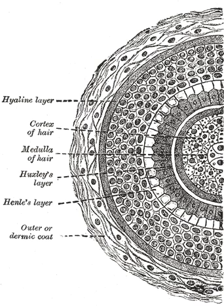Each strand of hair is made up of the medulla, cortex, and cuticle. The innermost region, the medulla, is not always present and is an open, unstructured region. The highly structural and organized cortex, the second of three layers of the hair, is the primary source of mechanical strength and water uptake. The cortex contains melanin, which colors the fiber based on the number, distribution and types of melanin granules.